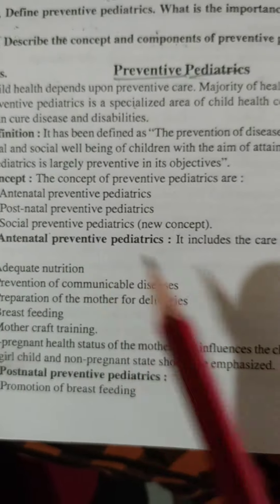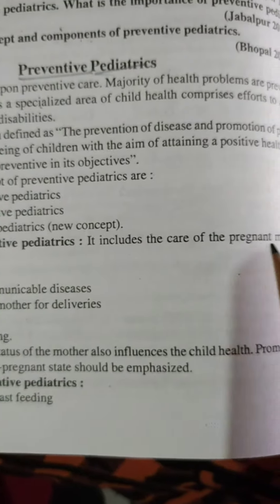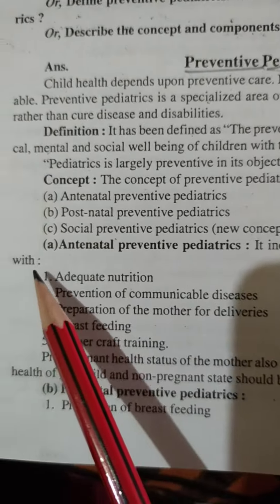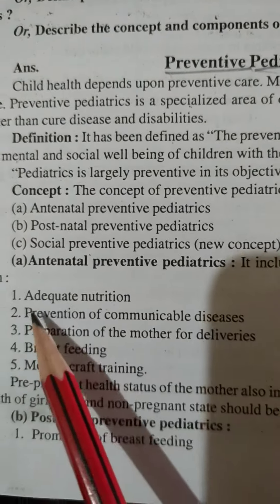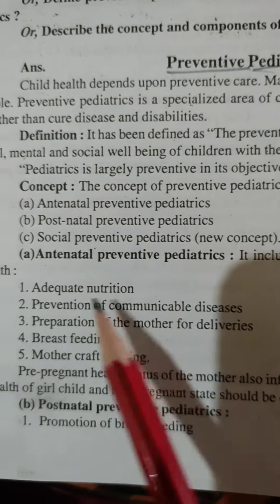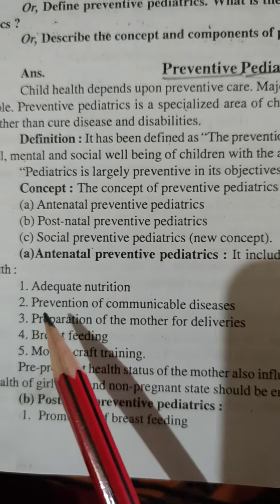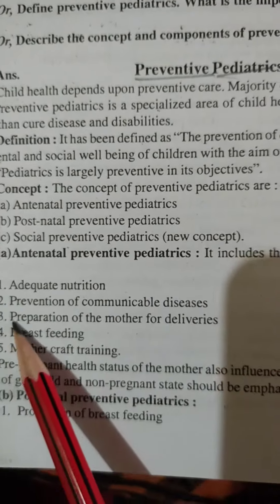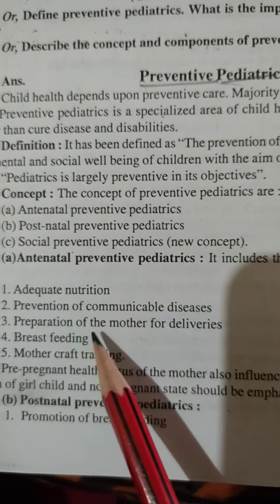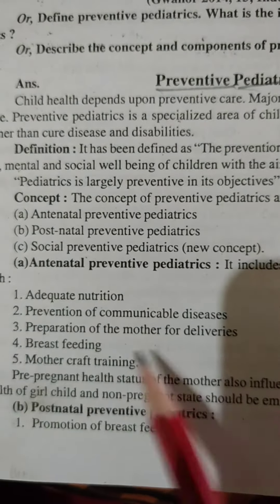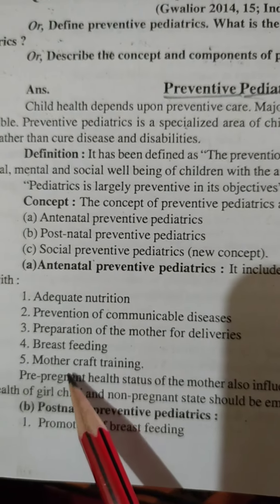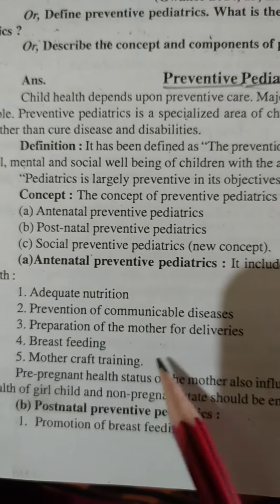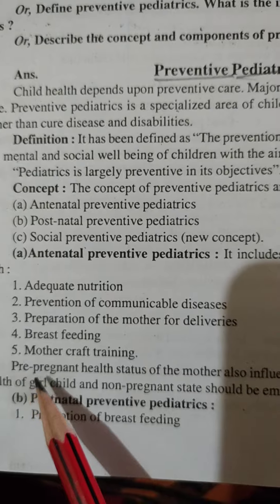Antenatal preventive pediatric includes the care of the pregnant mother: first, adequate nutrition; second, prevention of communicable disease; third, preparation of mother for delivery; fourth, breastfeeding; fifth, mother craft training.